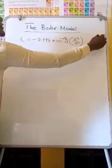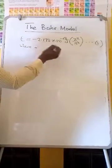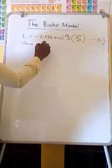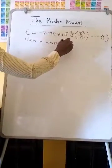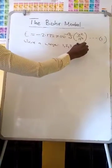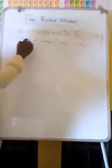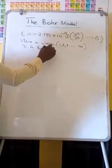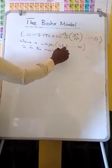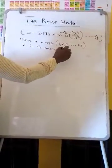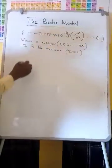This is equation 1, where n is the energy level or an integer — 1, 2, 3 — going up to infinity. And Z is the nuclear charge. In this case, the nuclear charge for hydrogen is equal to 1.